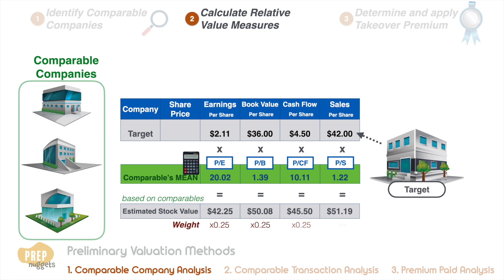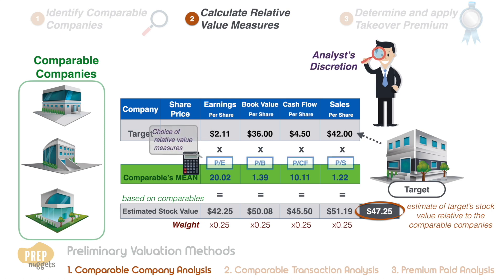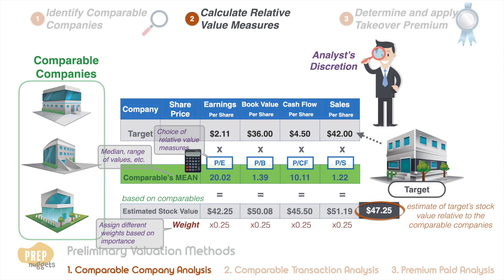If we assume the same weight for each of these estimates, we arrive at the mean estimate of $47.25. This value is an estimate of the target company's stock value relative to the comparable companies. Many of these sub-steps are up to the discretion of the analyst — some may prefer the median or range of values rather than the mean, and some analysts assign different weights to the valuation variables based on their importance.